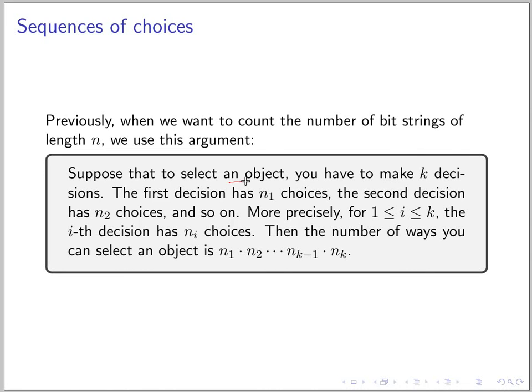...and if you have to make k decisions, where the first decision has n₁ choices, the second decision, independent of the first, has n₂ choices, and so on. More precisely, for 1 ≤ i ≤ k, the i-th decision has nᵢ choices. Then the number of ways you can select an object is n₁ · n₂ · ... · nₖ₋₁ · nₖ.